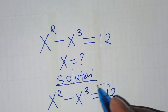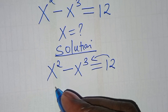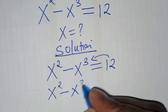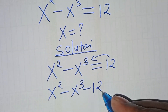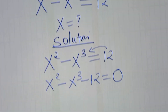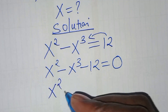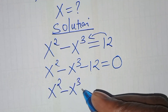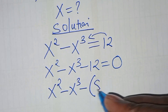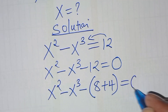The first step is to take 12 on the left hand side, so that here we have x to power 2 subtract x to power 3 subtract 12, this is equal to 0. From here we have x to power 2 subtract x to power 3 subtract 12, which we can express as 8 plus 4, this is equal to 0.